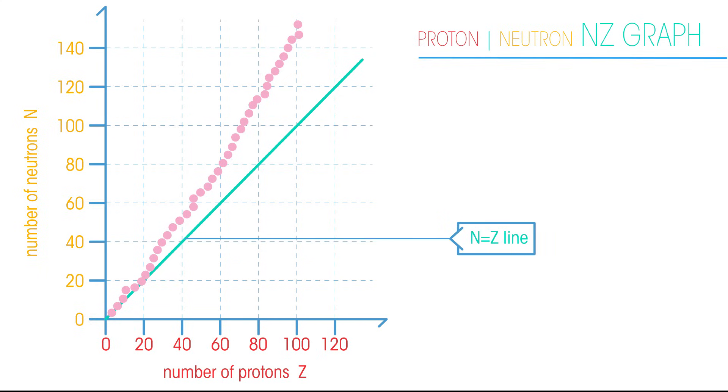This graph shows the number of protons on the x-axis and the number of neutrons on the y-axis. This is a stability line. If a radioisotope lies left or right of this line, it is unstable and likely to decay to become stable.